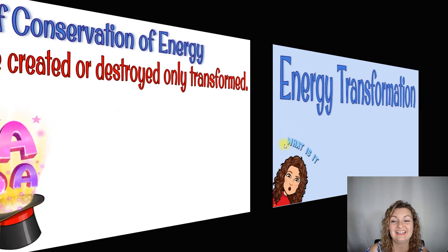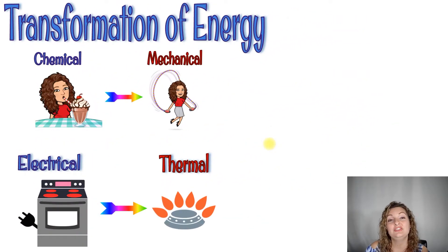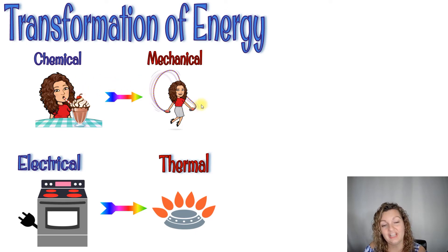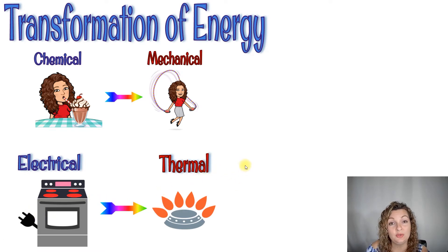Next one is energy transformation. Some examples: chemical energy — if we were eating ice cream, that ice cream is chemical energy and it can be transferred into mechanical energy when we go and jump rope. Electrical energy — if we plug in a stove, that can be transformed into thermal energy to heat up our food.